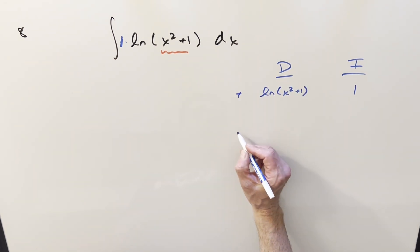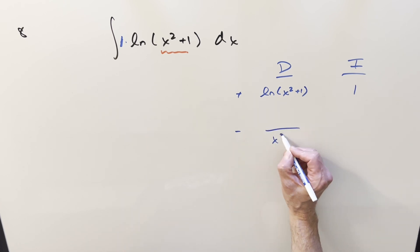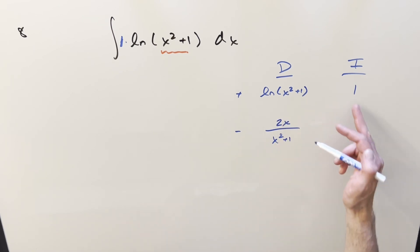We'll go ahead and differentiate this first. So what's going to happen, the derivative of this is going to be 1 over x squared plus 1, but we need chain rule differentiating this. We're going to get a 2x popping out here. Integrate this, that's just an x. And then we're going to have part of the solution on the diagonal.